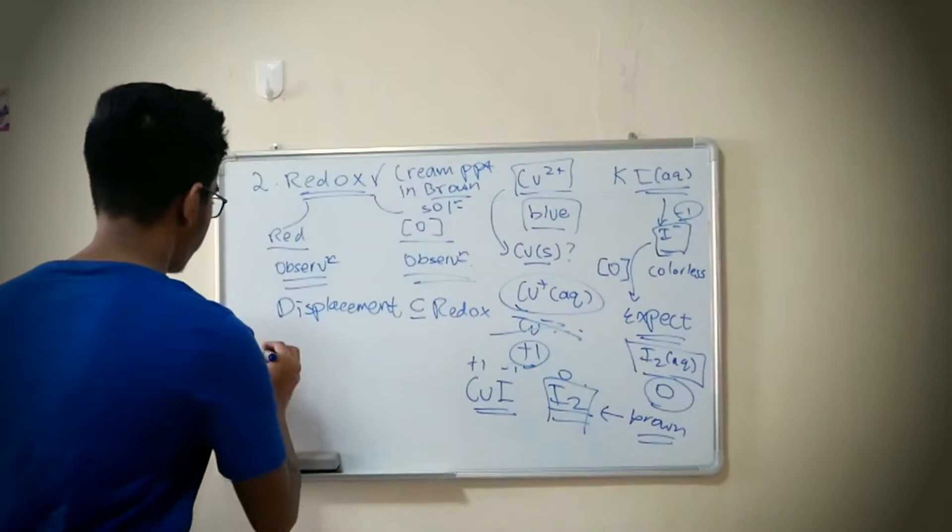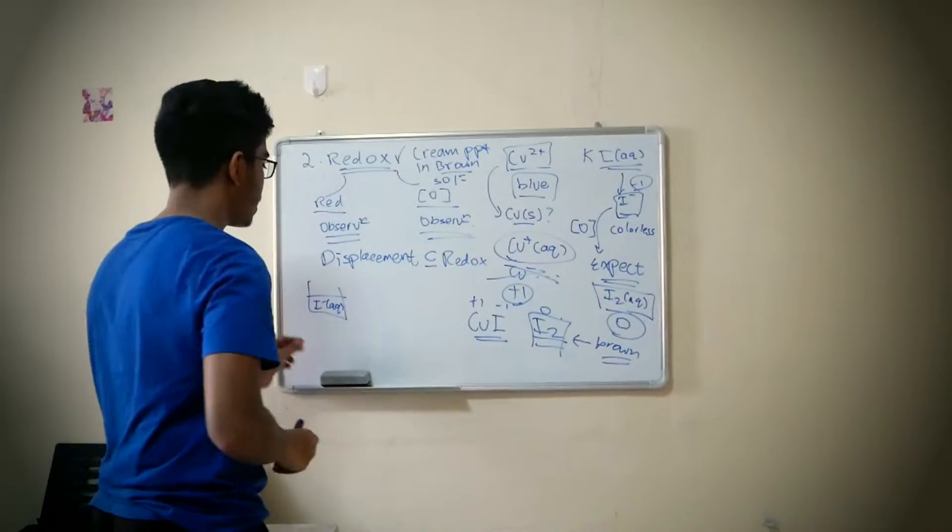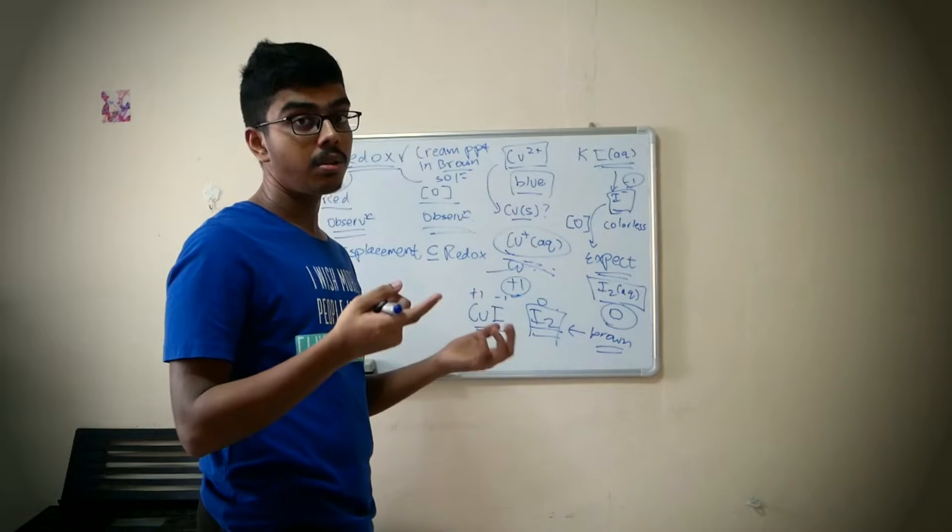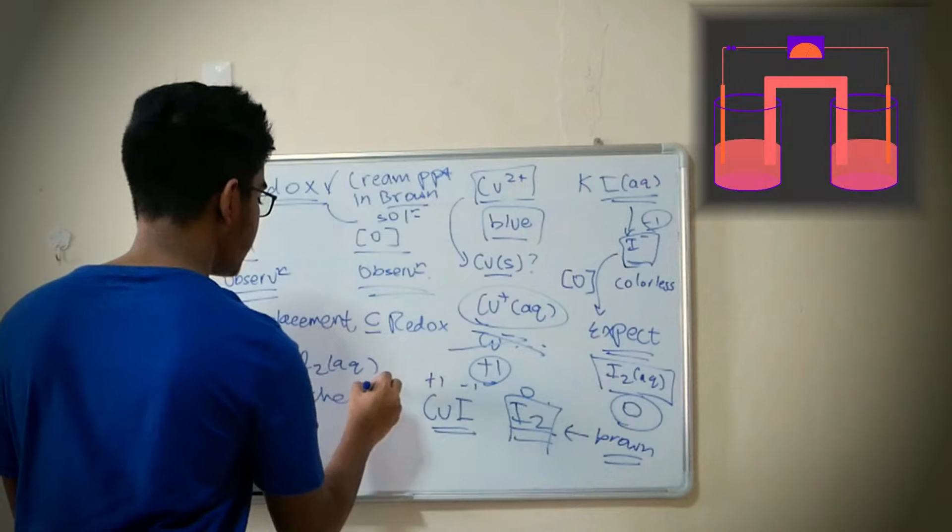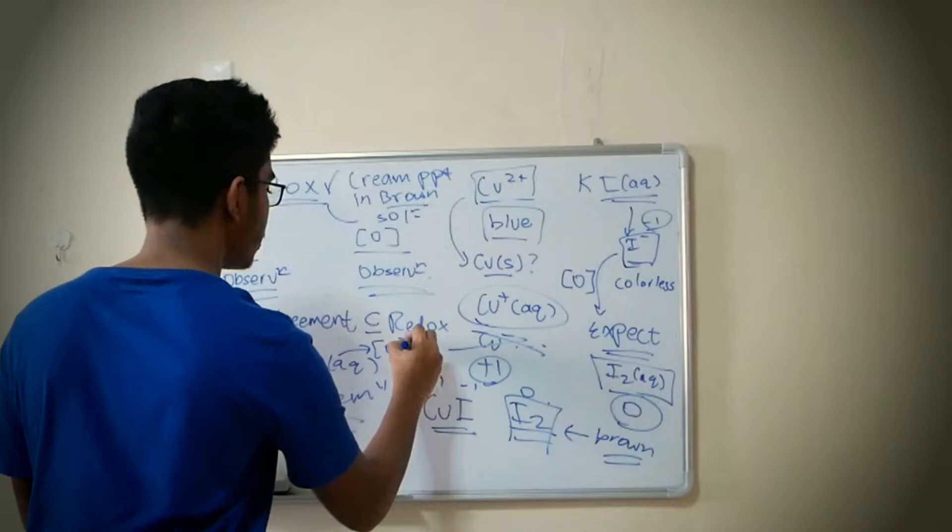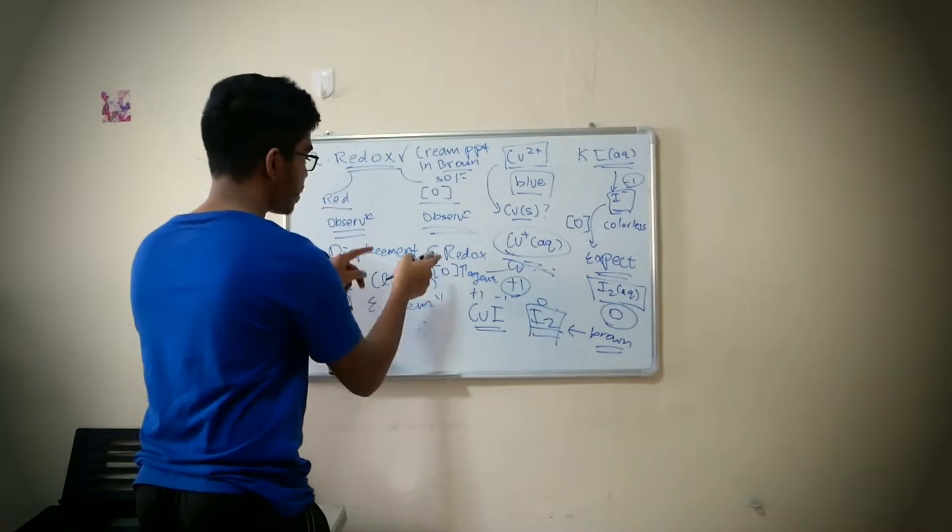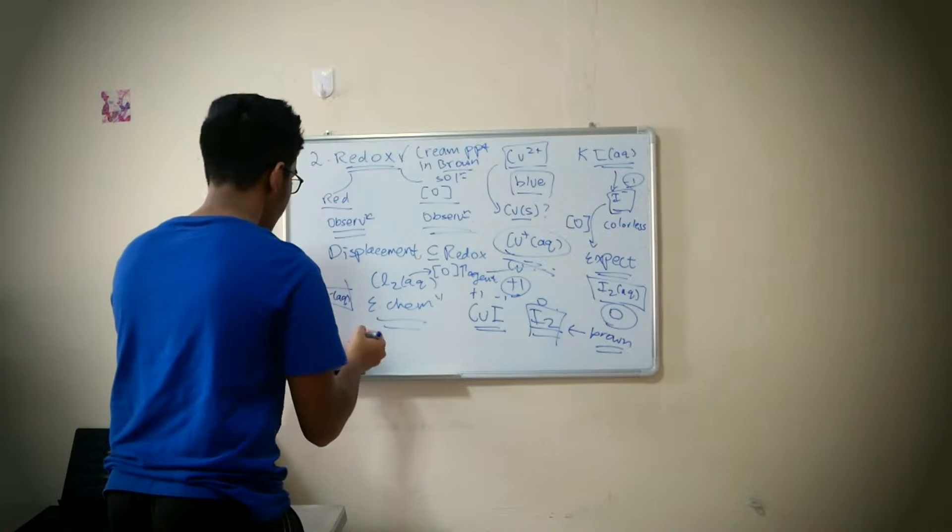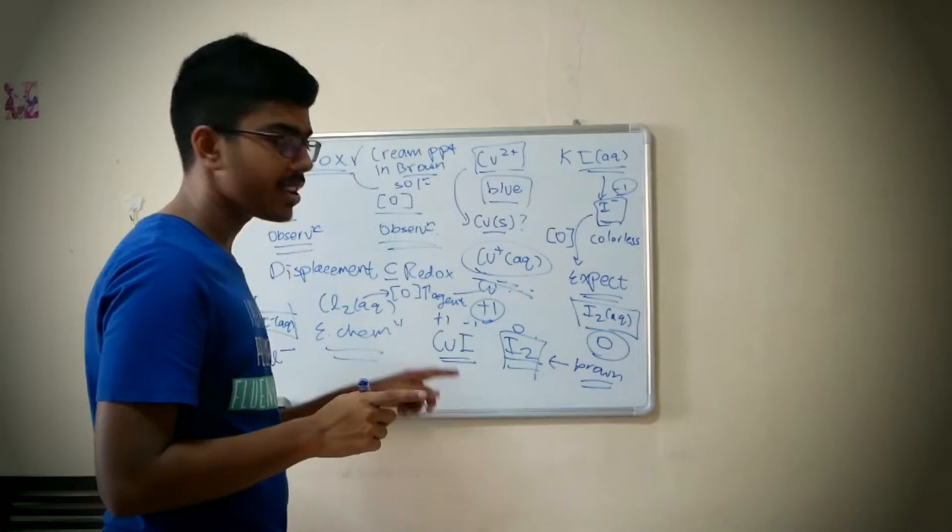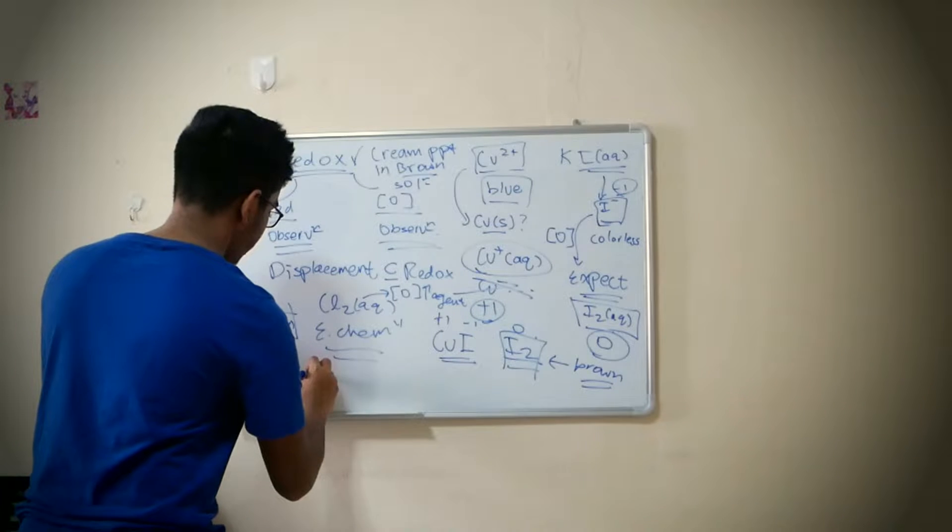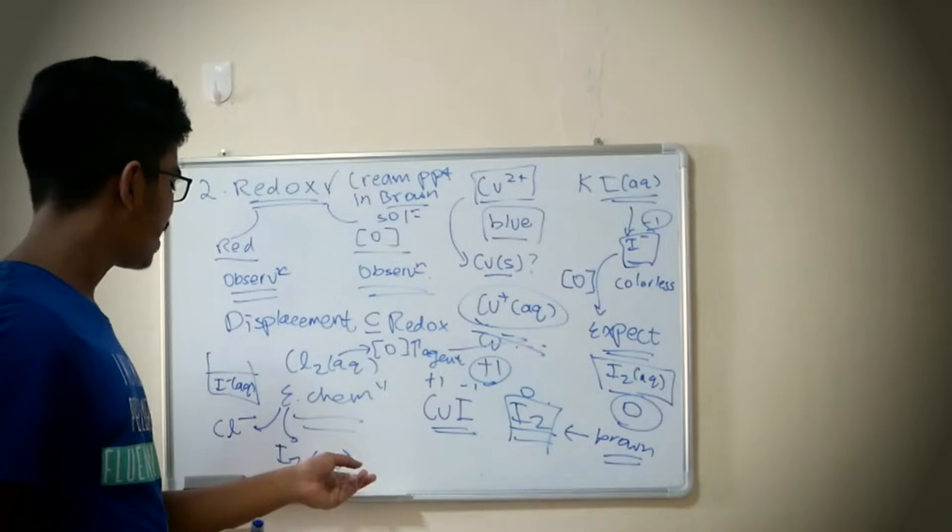Let's look at a great example. Now you have a solution containing I-. And then they ask you to add chlorine. If you guys actually studied this under the topic of electrochemistry, you know that chlorine is a stronger oxidizing agent. So this would oxidize this, which would form Cl-, and this thing gets oxidized to form I2.